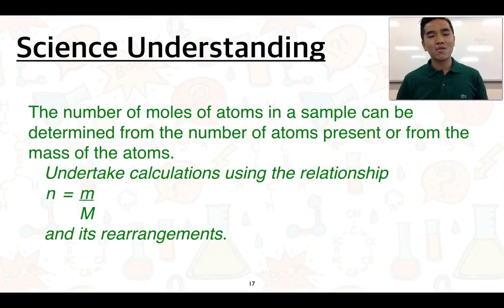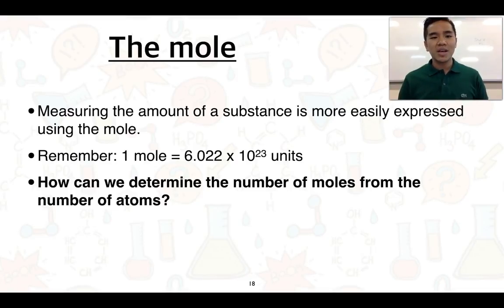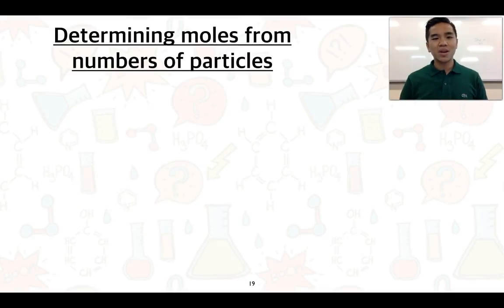This is the second video for 1.3 Quantities of Atoms. We're going to go through the third science understanding for today, looking at how we can use what we call the mole formula. As a refresher, one mole of a substance is equal to 6.022 times 10 to the 23 of it. Measuring the amount of substance is often more easily expressed using the mole, so let's determine the number of moles if we're given the number of atoms.